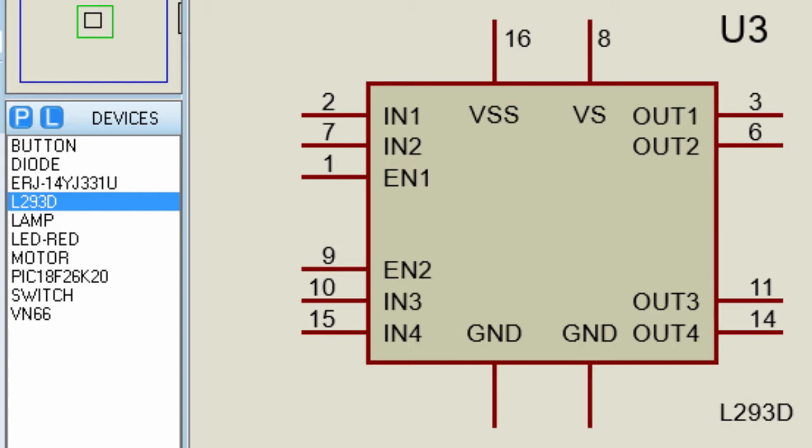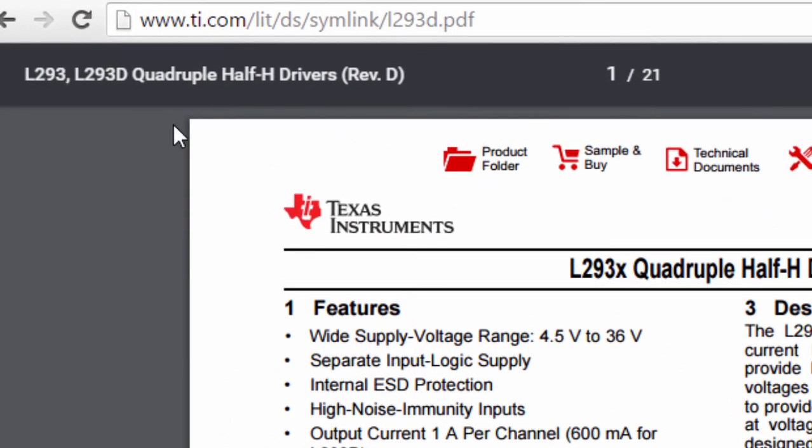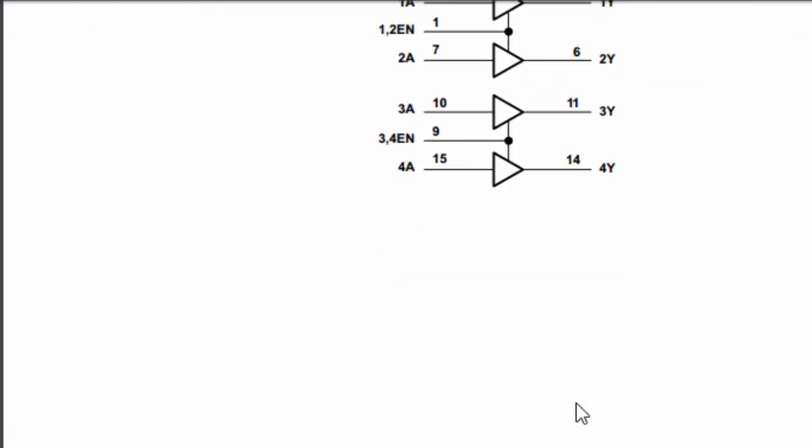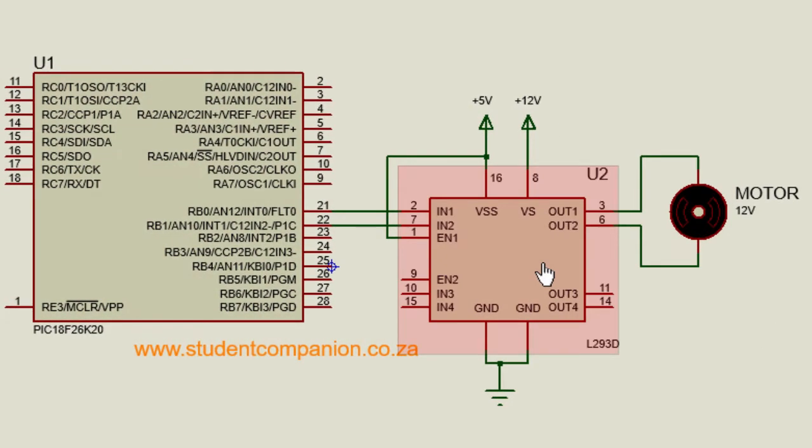You can read more about this device from its datasheet that you can access from Texas Instruments website. This is how you can connect your L293D to your PIC microcontroller. You can connect the first motor to Output 1 and 2. If you have a second motor that you want to connect, you can also connect it to Output 3 and 4. The VS is the supply voltage of the motor. In this case we are using a 12 volt motor, so we're going to connect pin 8 to 12 volts. The VSS is the supply voltage of the chip. The EN1 is to enable the first motor. If you connect it to 5 volts, the first driver is going to be enabled. If you connect a second motor, you'll have to enable the second EN. We've got two grounds that you can connect to your supply ground.